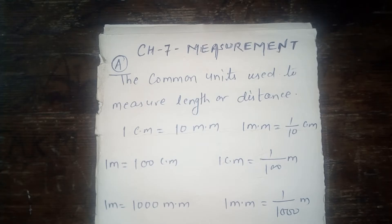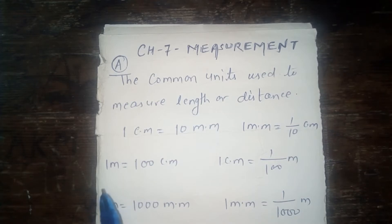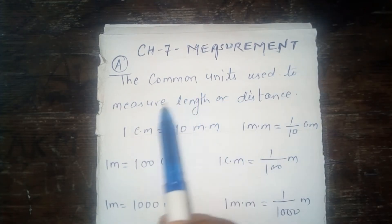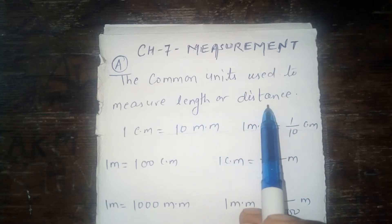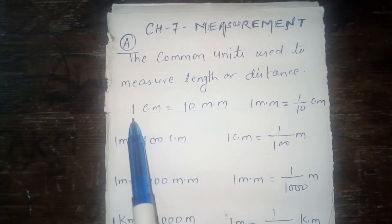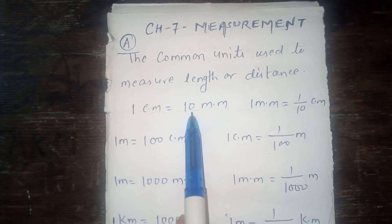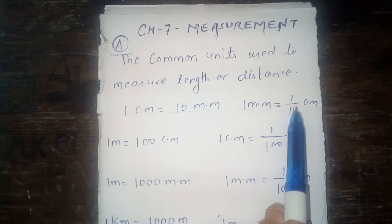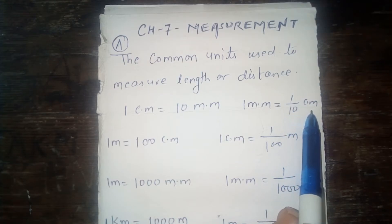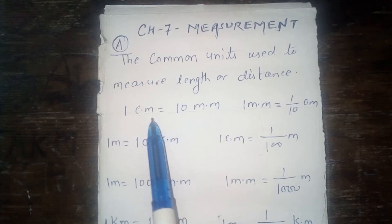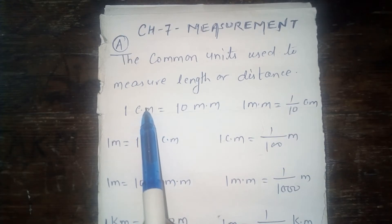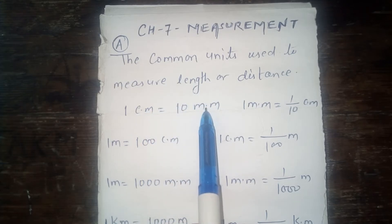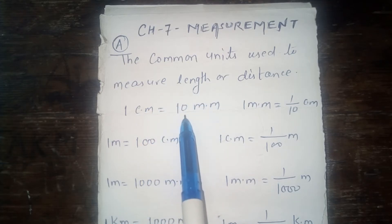The different types of measuring units are as follows. The common units used to measure length or distance: 1 centimeter is equal to 10 millimeters, and 1 millimeter is equal to 1 upon 10 centimeter. When centimeter is converted to millimeter, then multiply by 10.